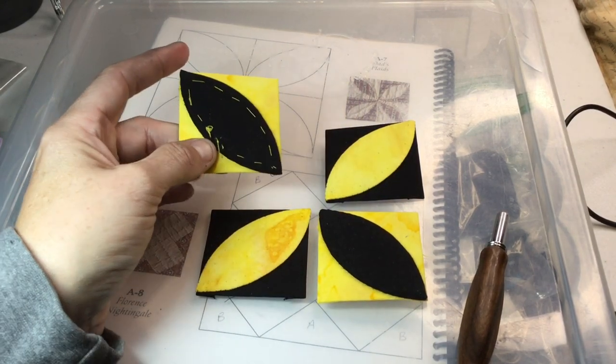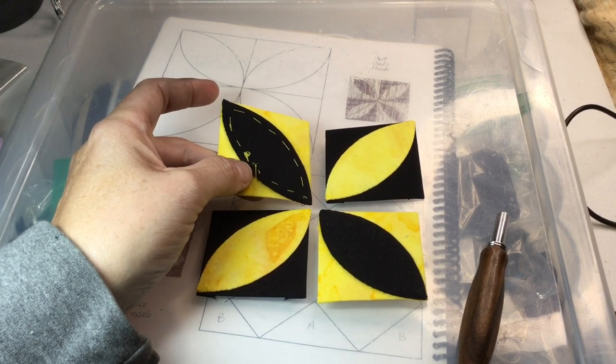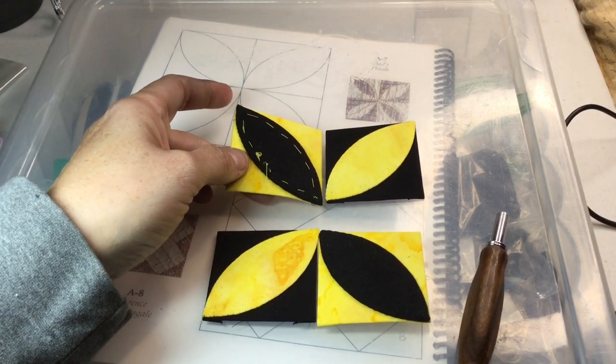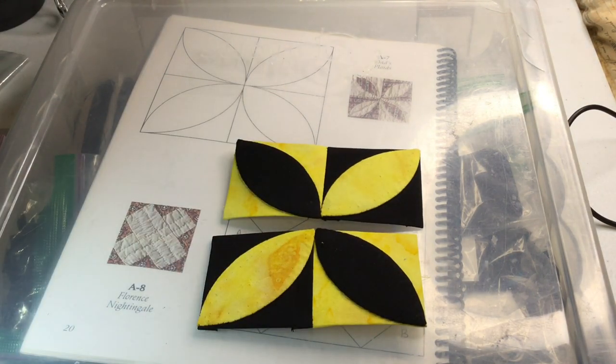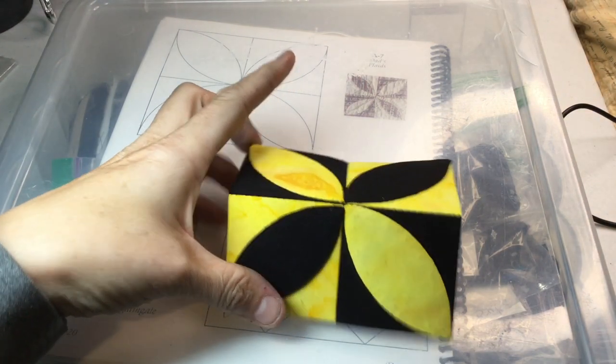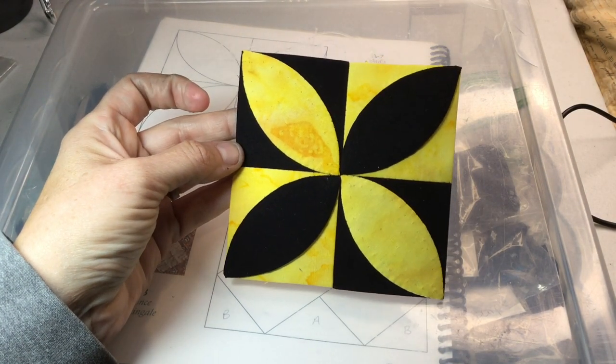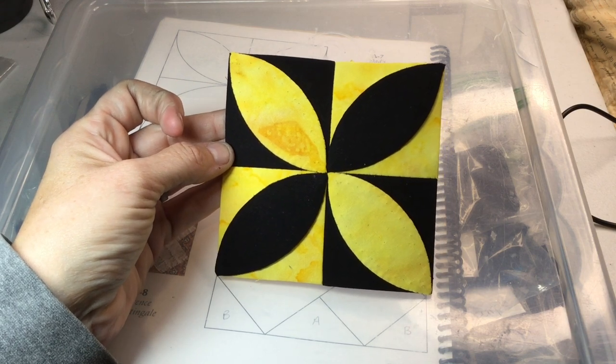I've paired them up into rows and will connect them to finish the block. I've connected all four squares and now my A7 block has been completed.